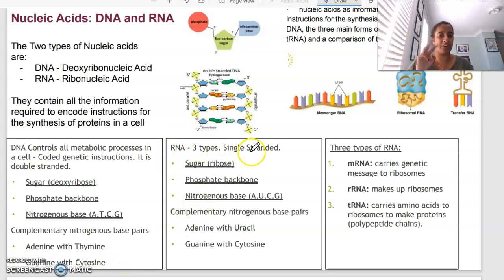RNA, there are three types of RNA. We say that RNA is single-stranded. Instead of the sugar being deoxyribose, in this case it is ribose. For ribonucleic acid, it also has a phosphate backbone, and in this case the nitrogenous bases are A, U, C, G. So adenine, uracil instead of thymine, cytosine, and guanine. In this case A binds with U, and G binds with C.